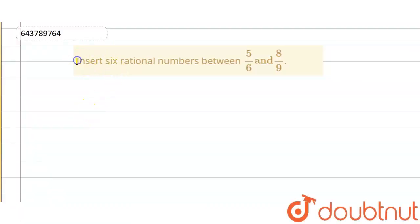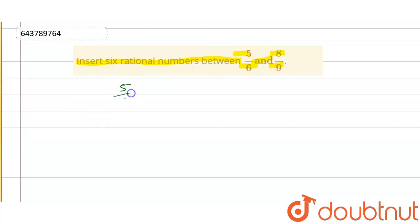The question given to us was: insert six rational numbers between 5/6 and 8/9. We have to insert six rational numbers, and the two given numbers are 5/6 and 8/9.